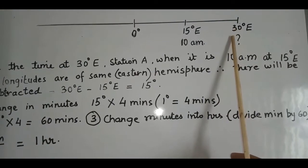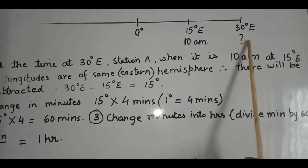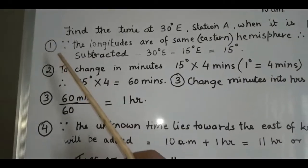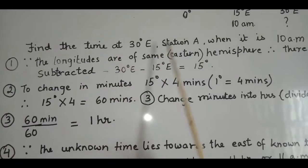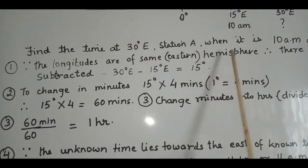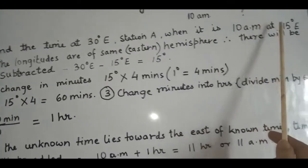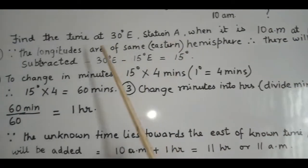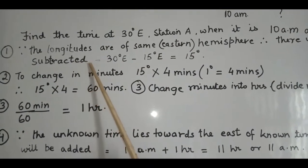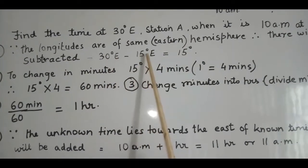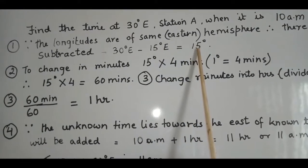According to the first step, since both longitudes are in the eastern hemisphere, they will be subtracted. So 30 degrees east minus 15 degrees east equals 15 degrees.